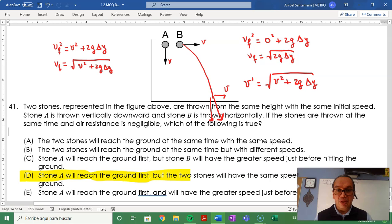Stone A will reach the ground first, but the two stones will have the same speed just before they hit the ground.